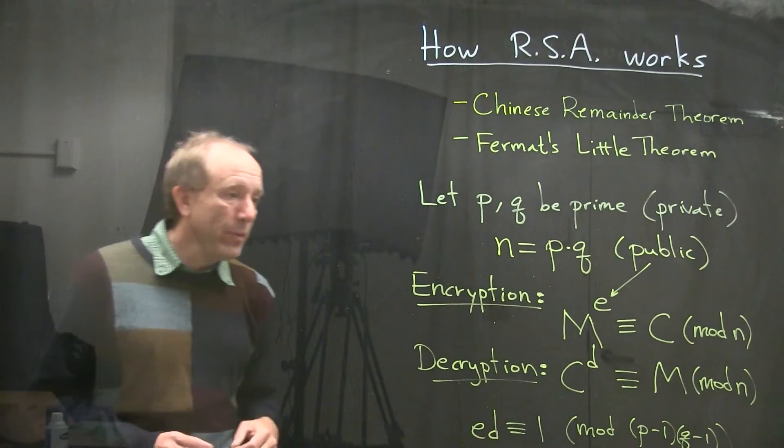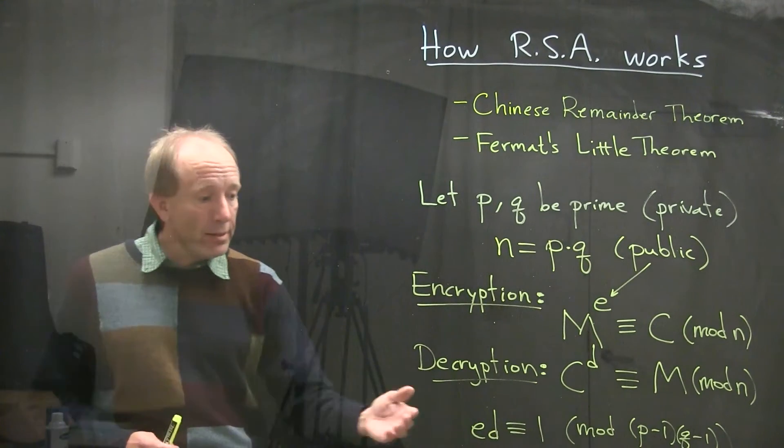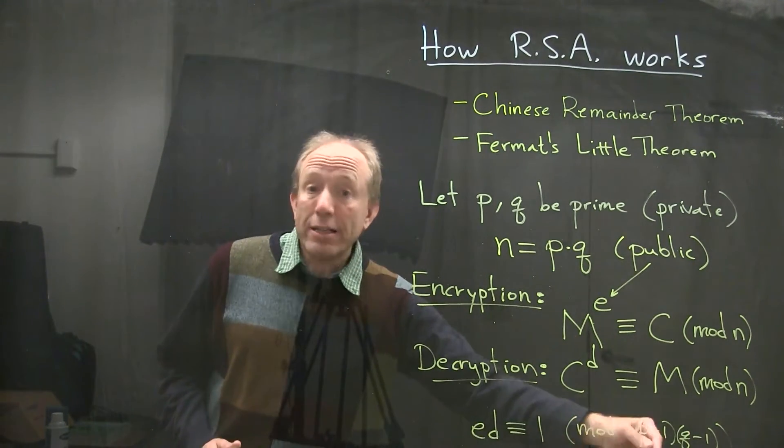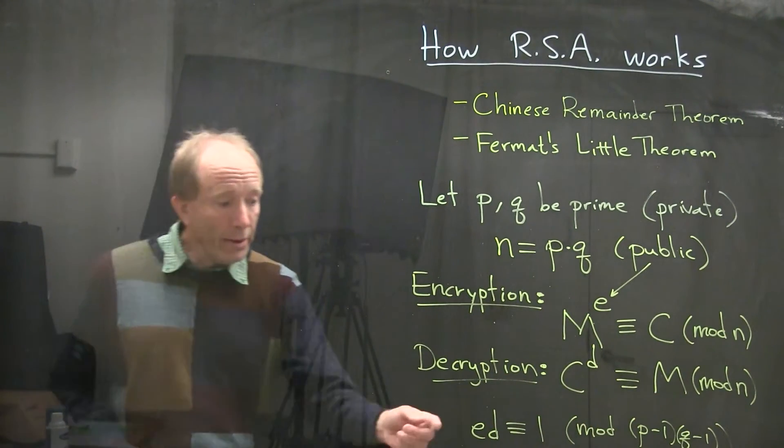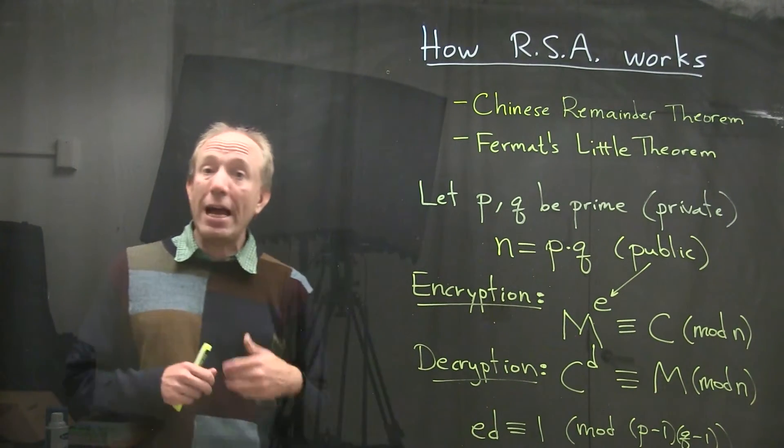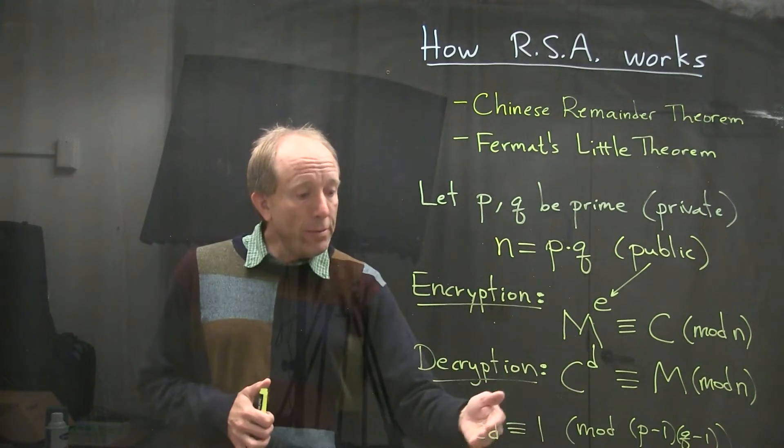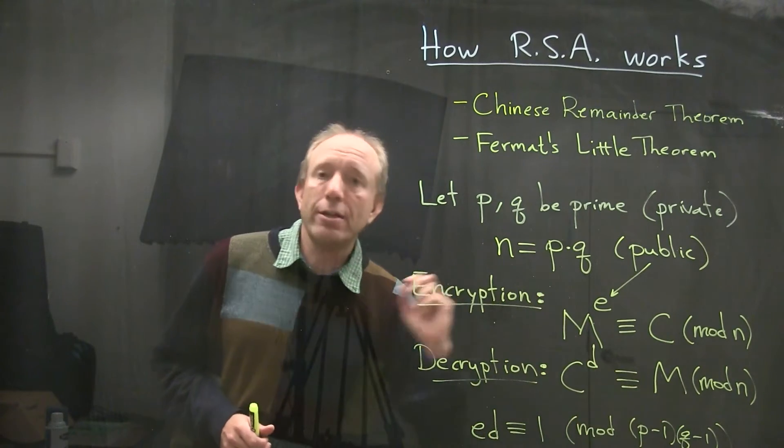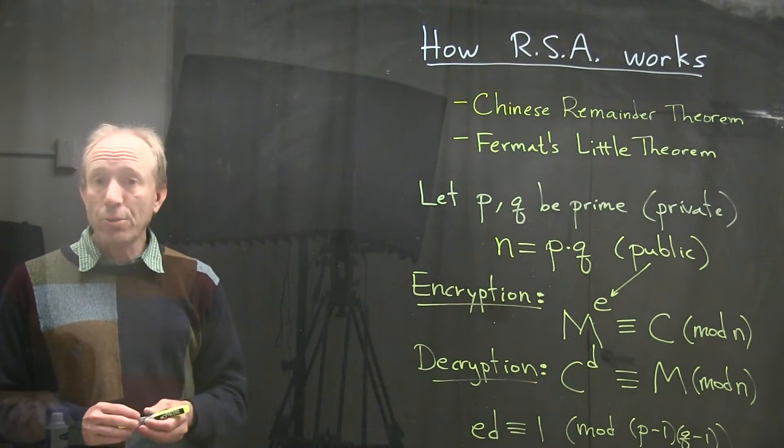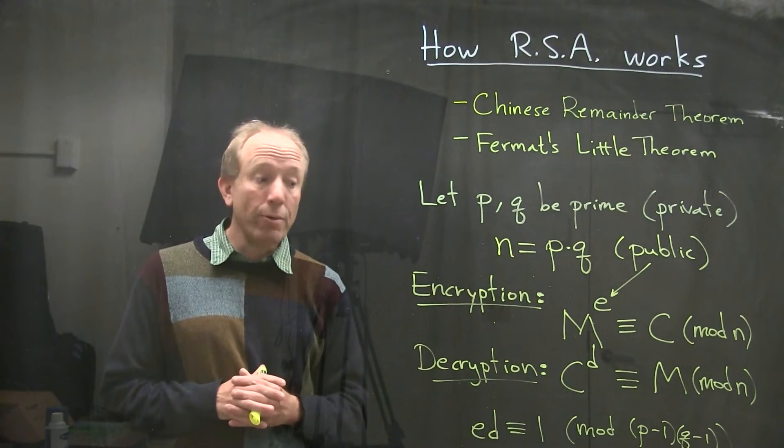And by the way, you can see that E would be given in advance, but it needs to be relatively prime to P minus 1 times Q minus 1. In other words, in order for E to have a multiplicative inverse, we have to be able to choose E so that it is relatively prime to P minus 1 times Q minus 1. All of that can certainly be arranged.